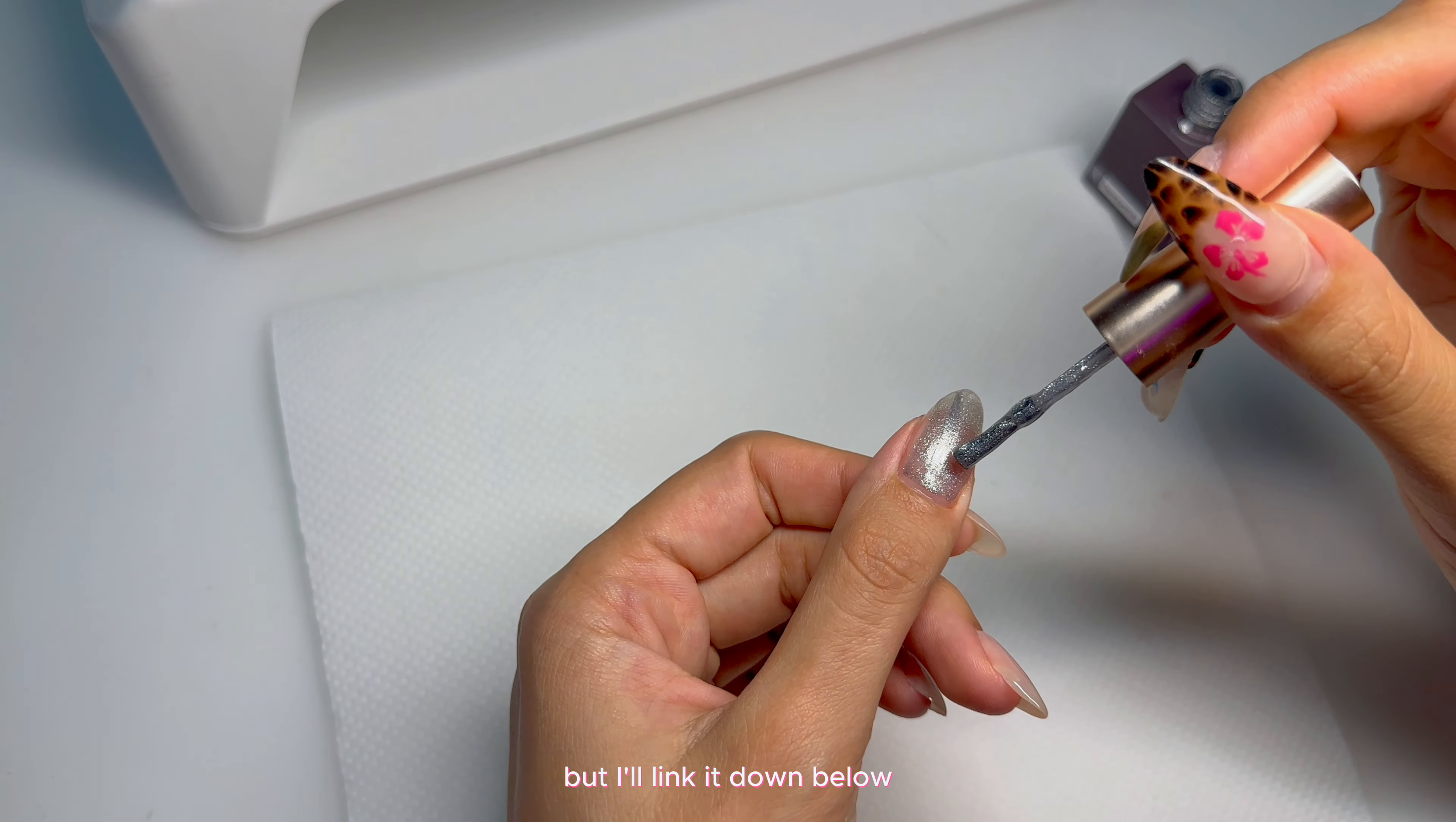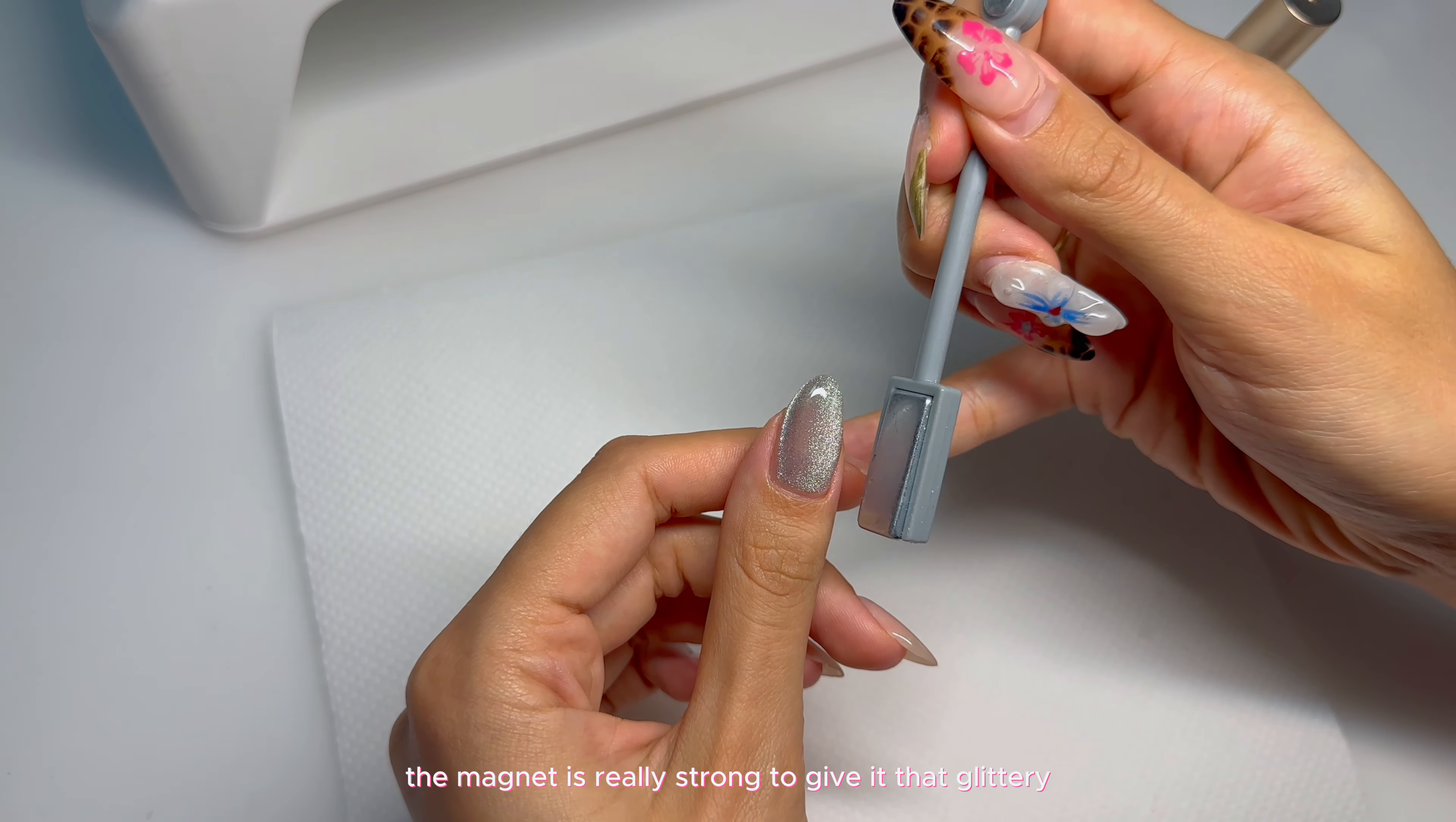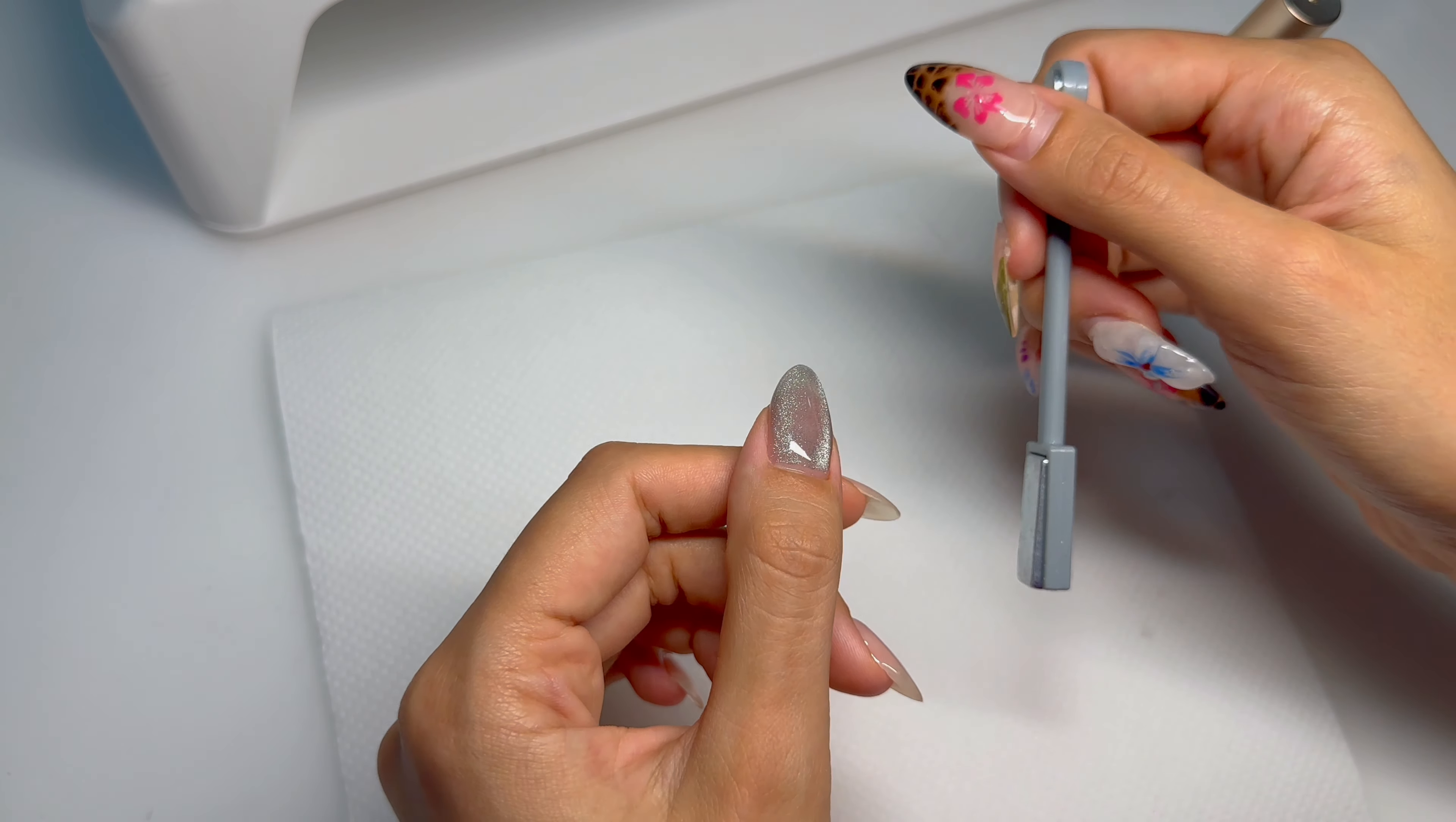And then I applied the silver magnetic gel from Enema or Emina. I don't know what the brand name is, but I'll link it down below. This is one of the best magnetic gels that I've used ever because of how responsive the magnet is. The magnet and the magnet in the nail work perfectly. It's really, really crucial that if you're doing this design, the magnet is really strong to give it that glittery, glowy look.